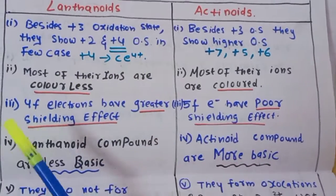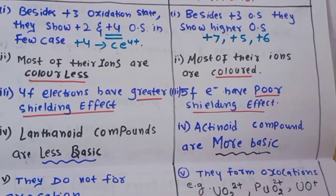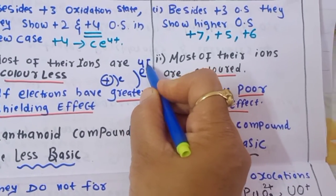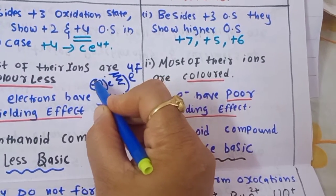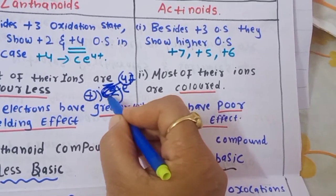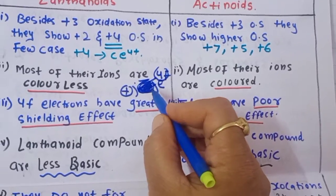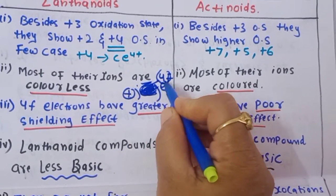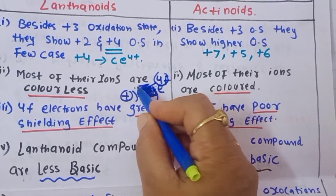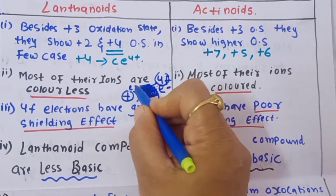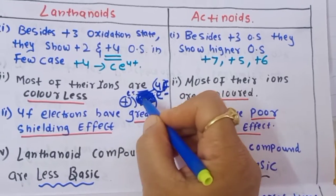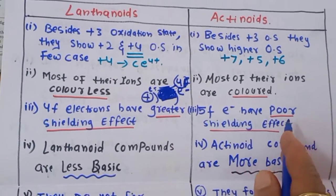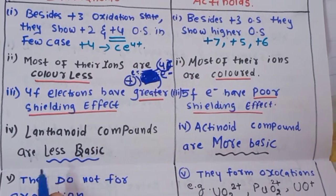Third difference: the 4f electrons in lanthanides have a greater shielding effect. This is because many intervening electrons exist between the nucleus and the 4f shell, forming a screen that prevents 4f electrons from strongly feeling the nuclear attraction. In contrast, the 5f electrons of actinides have a poor shielding effect.